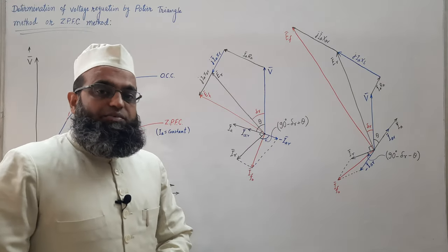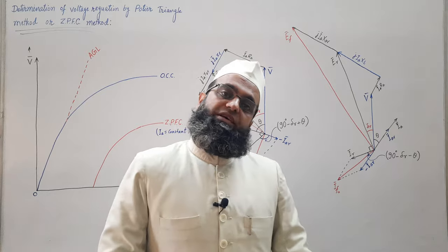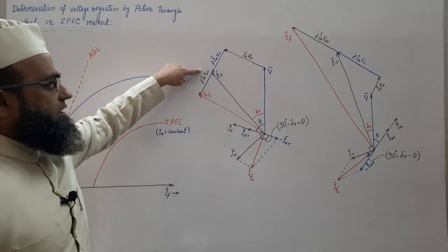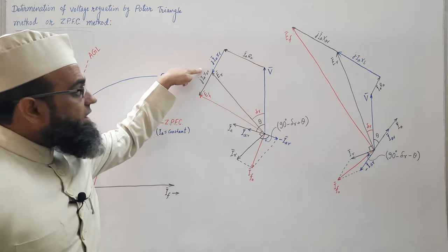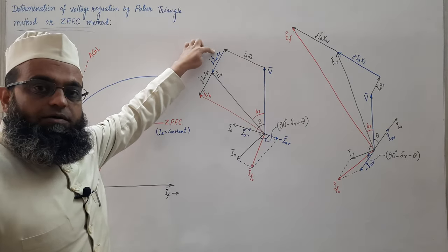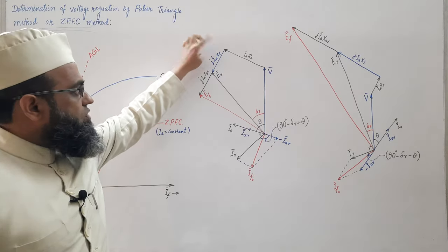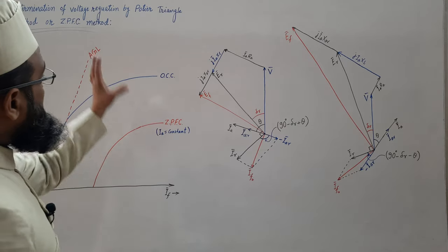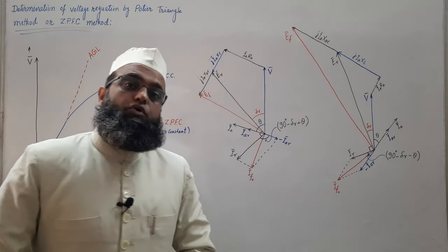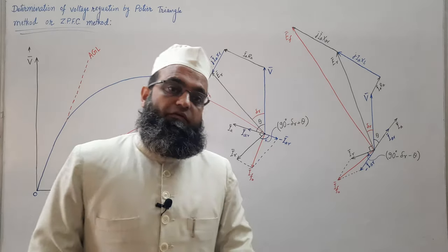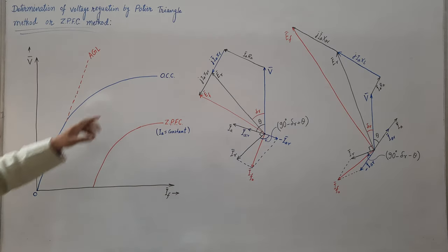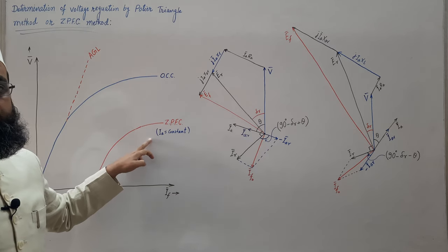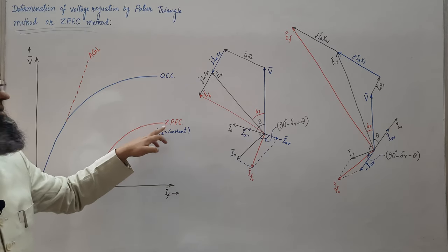This method gives more accurate results of voltage regulation. Here we deal with XAR with MMF, whereas this reactance XL with EMF — we will discuss this later. For obtaining voltage regulation using the Poitier triangle method, we need to perform two tests: open circuit test and the ZPFC zero power factor test.